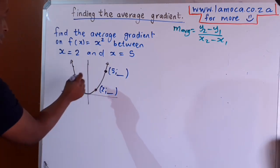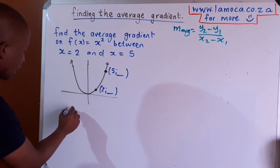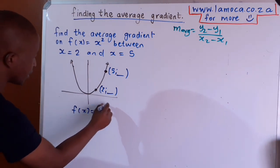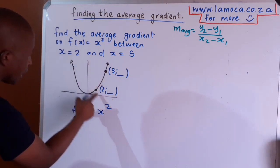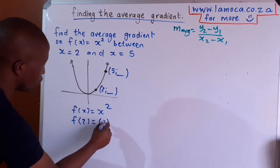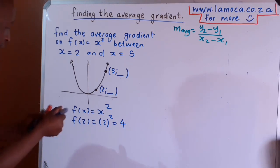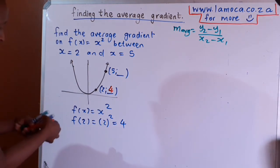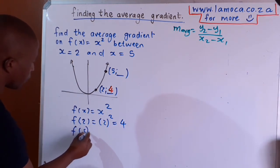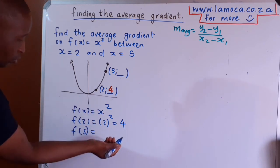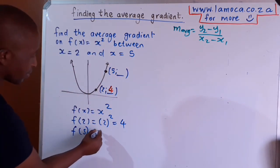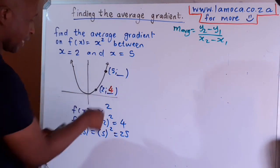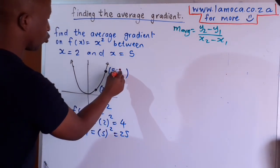If f of x is given as x squared, then f of 2 will be 2 squared, which gives us a value of 4. That simply means when x is 2, the corresponding y value is going to be 4. Similarly for 5: f of 5 means wherever you see x you replace it with 5. Since our function is x squared, we have 5 squared, which gives us an answer of 25. So when x is 5, the corresponding y value is 25.